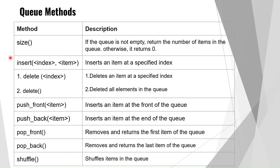There are nine methods available in queues: size, insert, delete, push_front, push_back, pop_front, pop_back, and shuffle. The size method returns the number of items in the queue if it is not empty, otherwise it returns zero. The insert method inserts an item at a specified index — you pass the index number and item as arguments, and the value is stored at that particular index.